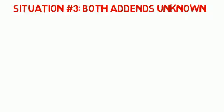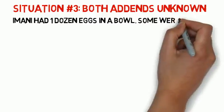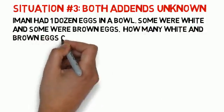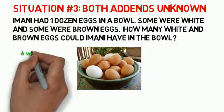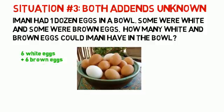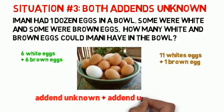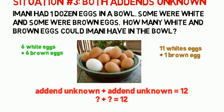Our last situation is when both add-ins are unknown. These problems are great because there are a lot of different ways to answer them. Imani had one dozen eggs in a bowl — some were white and some were brown. How many white and brown eggs could Imani have? The most common answer is six white and six brown eggs, and that could be true. But there are other answers too, since we don't know what the add-ins are. She could have 11 white eggs and one brown egg and still have one dozen, or 12 eggs. Can you figure out some other combinations?